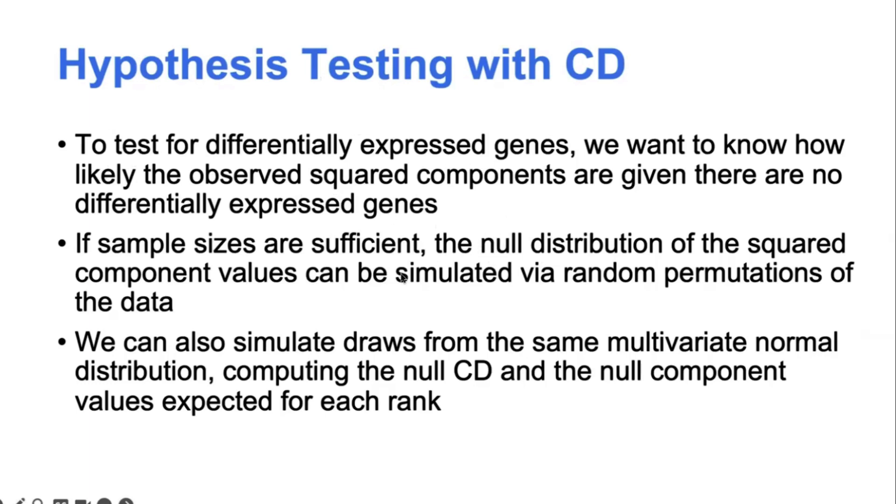So you draw all from the same distribution. And then you compute a null characteristic direction vector to get the expected component values for each gene rank, assuming that there is no differential expression. And then that generates your null distribution for the component values for a given rank in that vector.